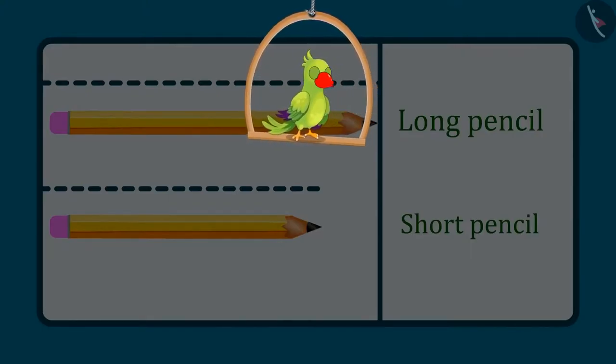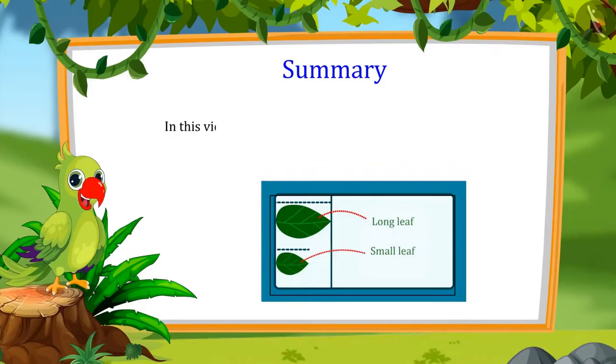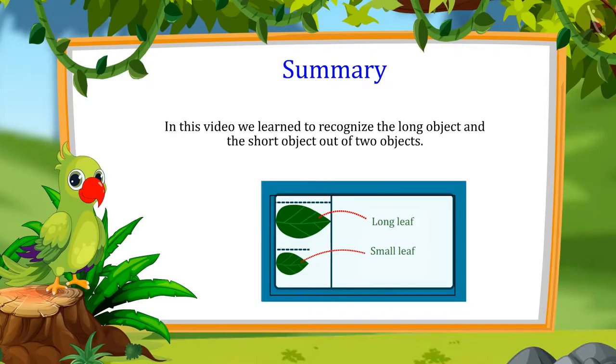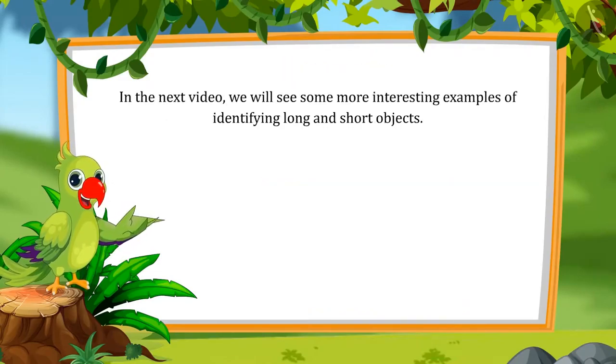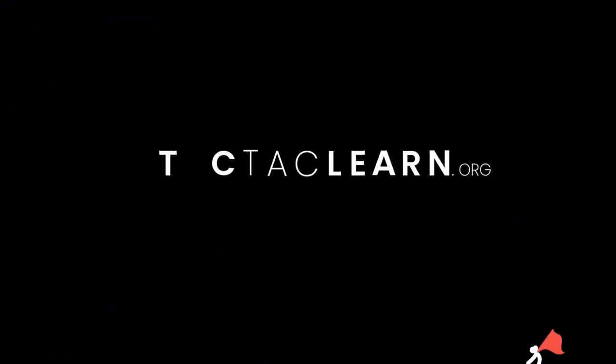So kids, you enjoyed comparing the length of objects, right? Now you also compare the length of objects around you and tell which is the long object and which is the short object. That is all for today. In this video, we learned how to identify the long object and the short object out of two objects. In the next video, we will see some more interesting examples of identifying long and short objects. Till then, bye-bye friends!